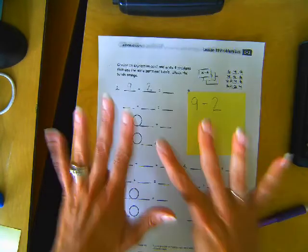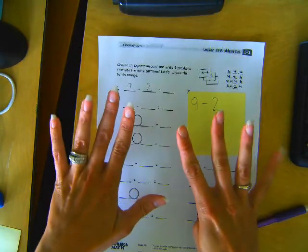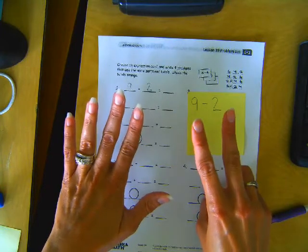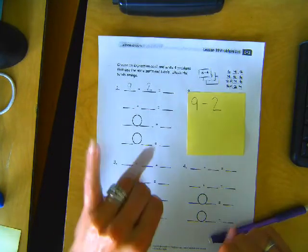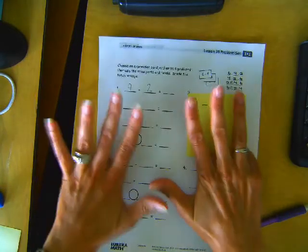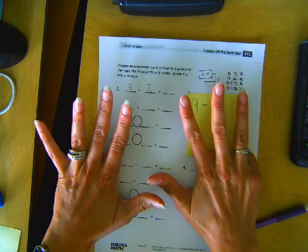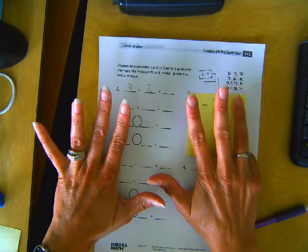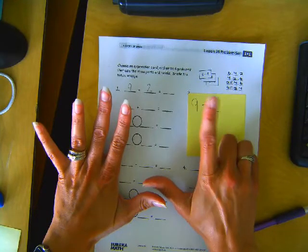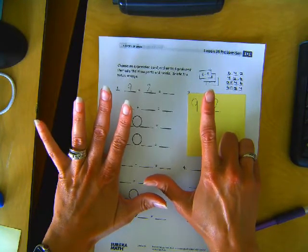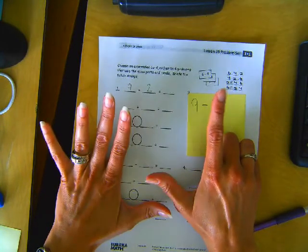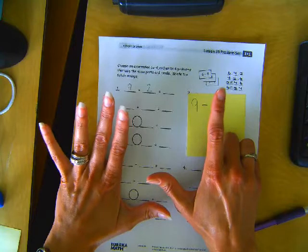So we have 9 and we take away 2. Let's do this. 1, 2, 3, 4, 5, 6, 7, 8, 9. There we go. Got to get my fingers going the math way, don't I? Alright, we're taking 2. 1, 2. How many are left? 5, 6, 7. Okay?